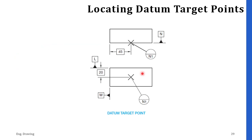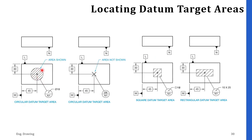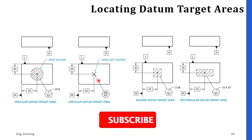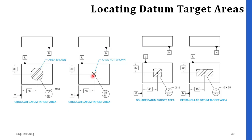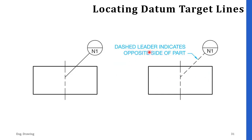Now, locating the datum target symbol. On the screen you can see a drawing that indicates the datum target symbol. Here you can see a datum target symbol with circular type — in one case the highlighted area is not shown, and in another it is shown. Here you can see a slot-type datum target area and a rectangular datum target area. Here you can see a dashed leader line that indicates the opposite side of the part. When the opposite part in the drawing is not visible in the front, side, or top view and you need to target that point through a datum target, you can indicate it with a dashed line. A continuous type of line is also shown.